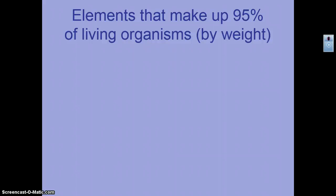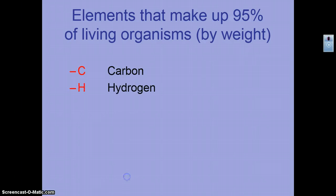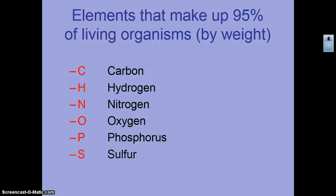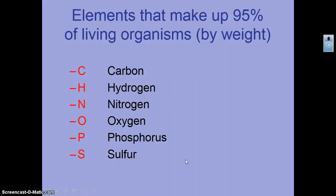The elements that make up 95% of living organisms by weight are important for you to know. You need to memorize these in order using the mnemonic 'CHNOPS': carbon, hydrogen, nitrogen, oxygen, phosphorus, and sulfur make up 95% of living organisms by weight.